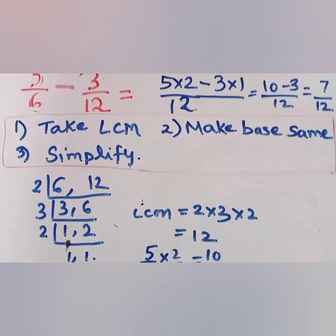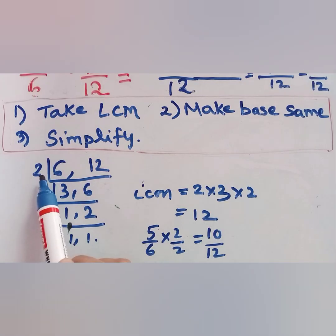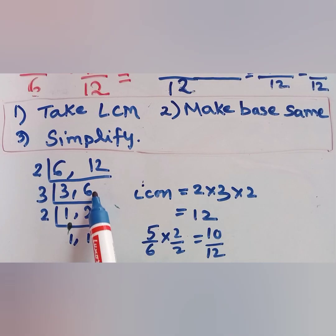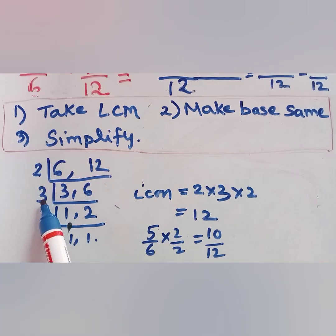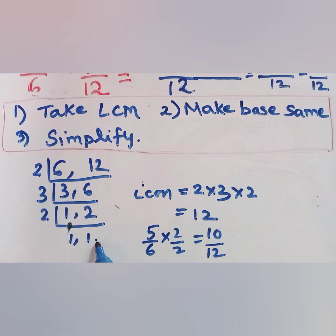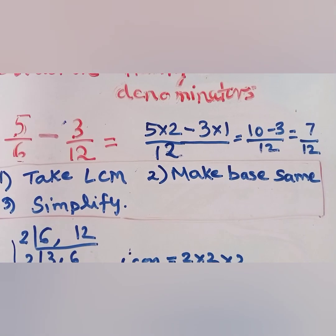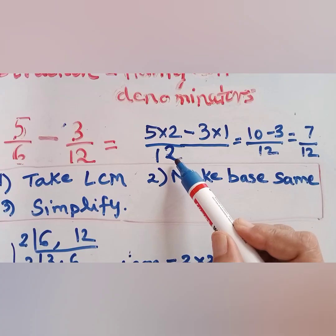Let us see — we are taking the LCM of 6 and 12. 6 and 12 are multiples of 2, so 2 threes are 6 and 2 sixes are 12. Then 3 and 6 are multiples of 3, so 3 ones are 3 and 3 twos are 6. Then 1 and 2: 2 ones are 2. So the LCM is 2 × 3 × 2, that is 12. We have made the LCM 12 and write it in the base.